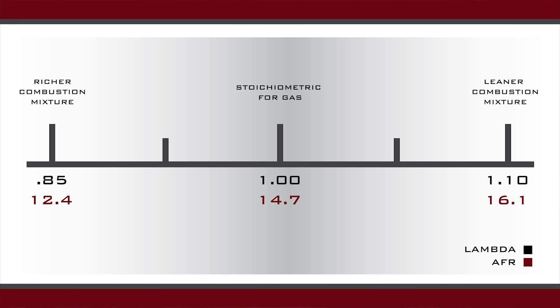Lambda and AFR, or air-to-fuel ratio, is a scale that measures the results of combustion. Both measure the amount of fuel and air present during a combustion cycle. A lambda reading of 1.00 indicates ideal combustion.